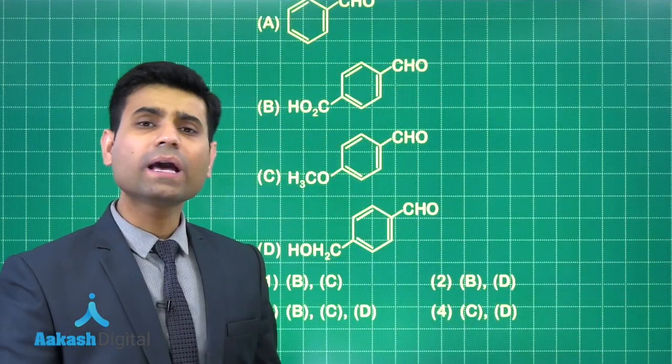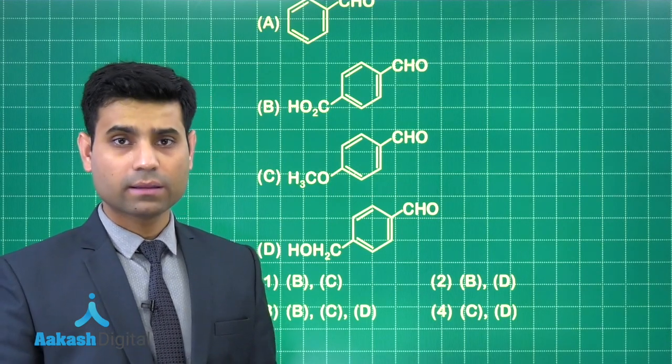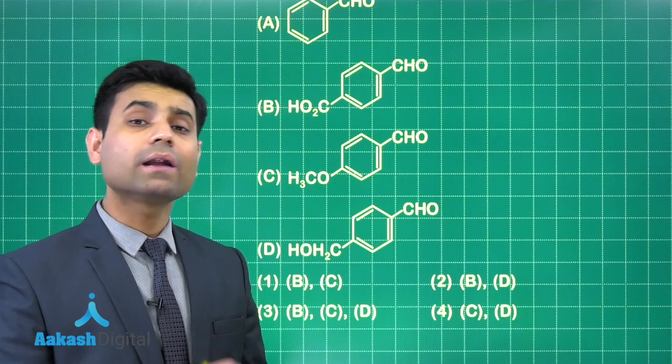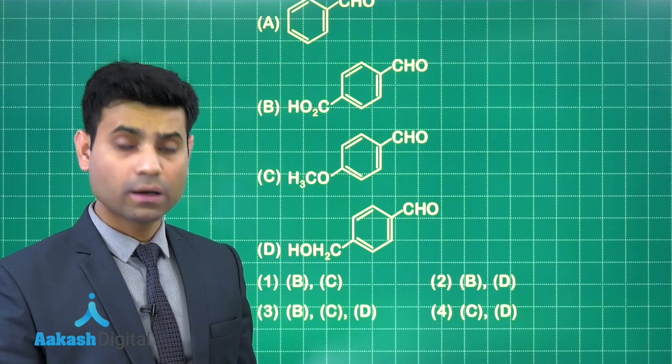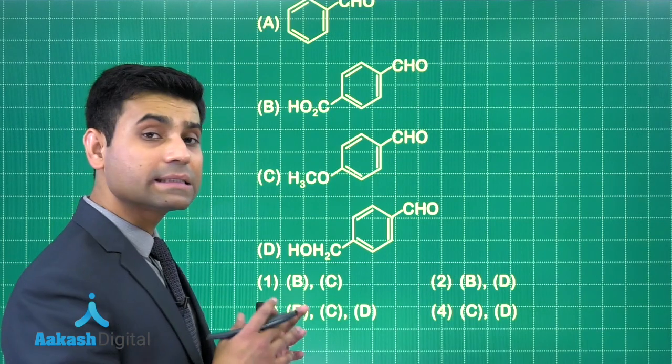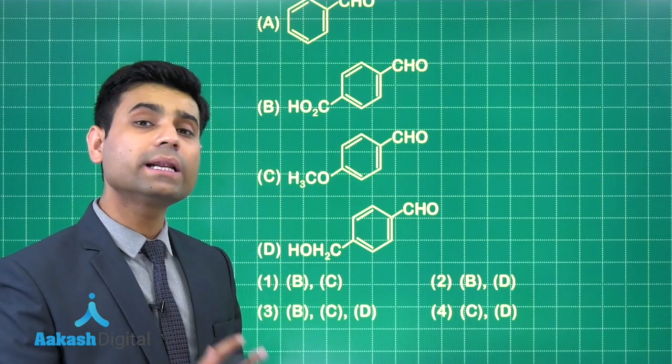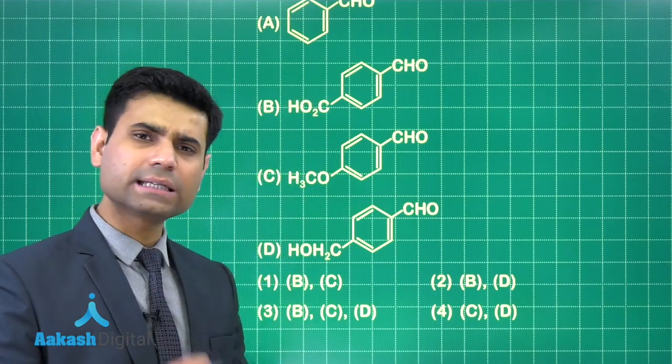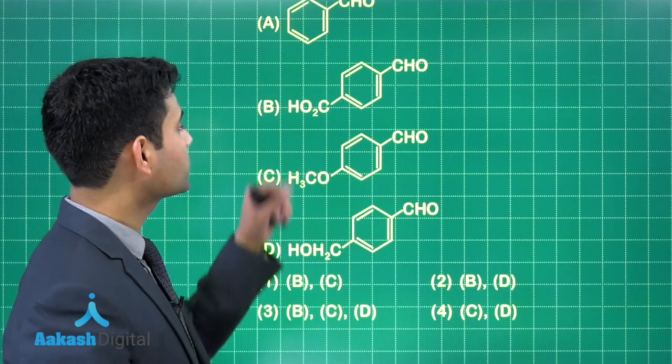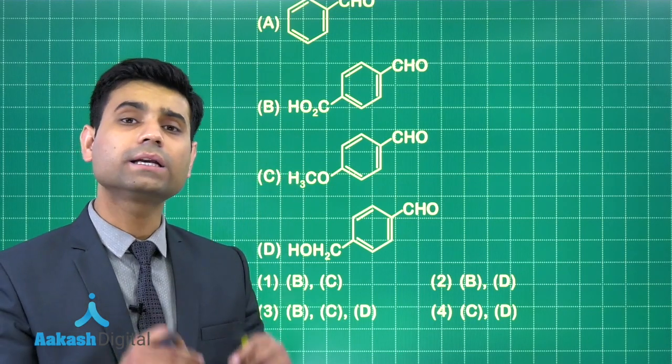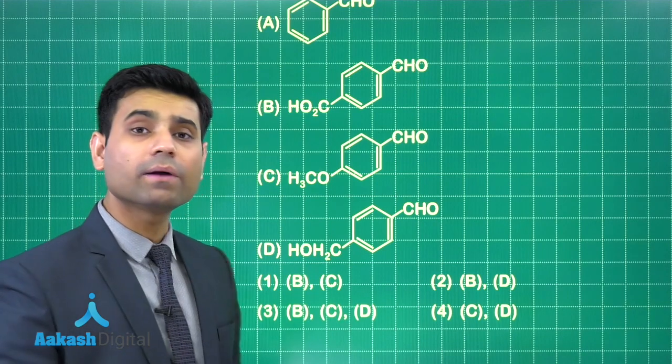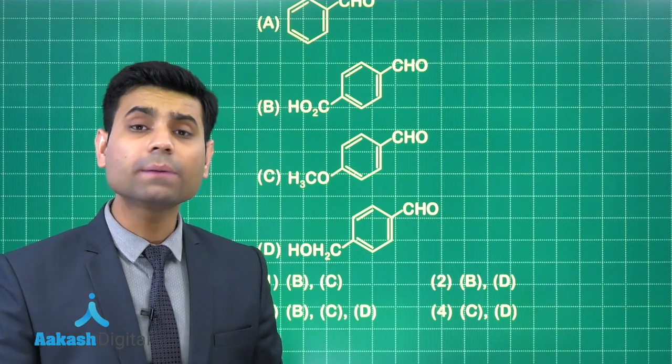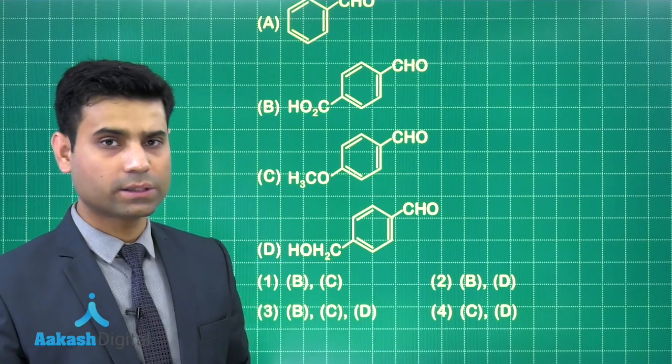Students, we should know that if we have any acidic hydrogen, then one Grignard reagent mole will be converted into alkane. Hence, if I have any acidic hydrogen, in that case one equivalent will not be sufficient. So here we have benzaldehyde derivatives. The acidic hydrogens are present in option B because here we have CWH group and in option D where we have alcoholic group. So B and D will not give us Grignard product with one equivalent of Grignard reagent only.